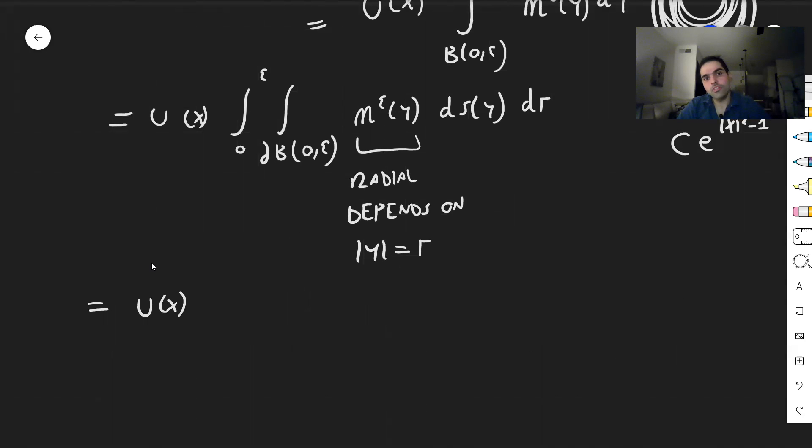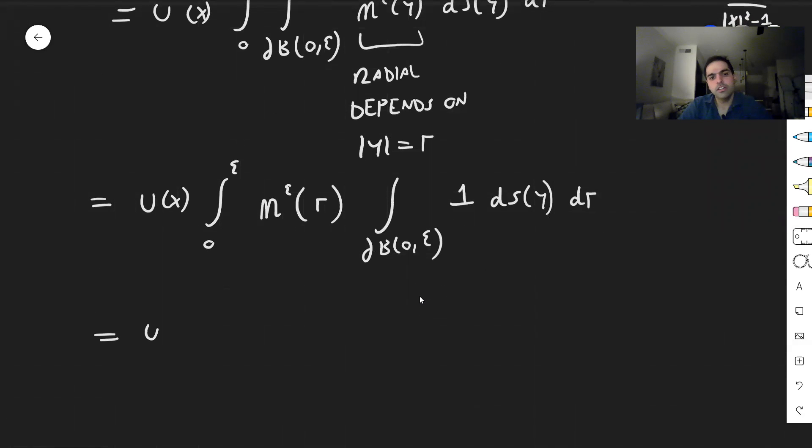So we're just going to pull it out outside the inner integral. So this becomes u of x integral from zero to epsilon. So usually you have to write eta epsilon of absolute value, but here just to abuse notation, let's write as eta epsilon of r, with the distinction that this is an R^n, but this is a real number. And then this becomes surface integral of 1, ds of y, dr, but the surface integral of 1 is just a surface area of that sphere. And the good news is here you don't need to know the value of it, so let's just write it as a surface area of the sphere.